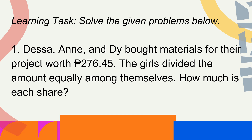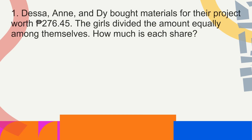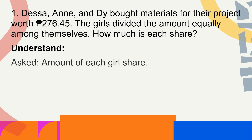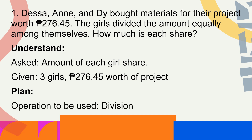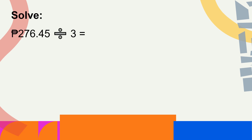Let us find out by solving the problem following the steps. Understand: what is asked is the amount of each girl's share. The given: 3 girls and 276.45 worth of project. To plan: the operation to be used is division. To solve, our number sentence is 276 pesos and 45 centavos divided by 3 equals N. We will divide 276.45 by 3.